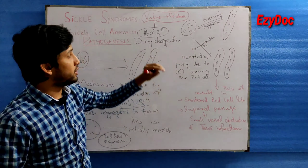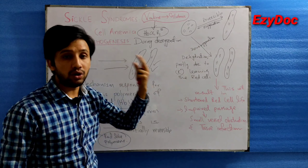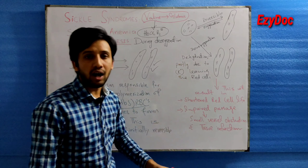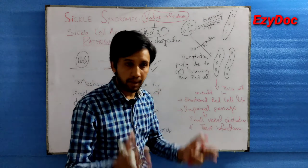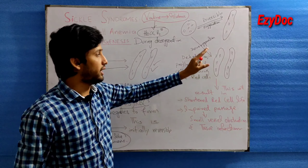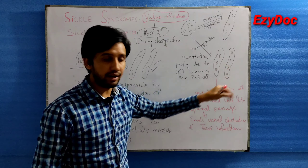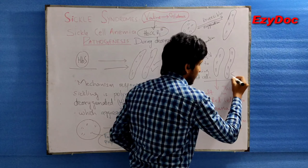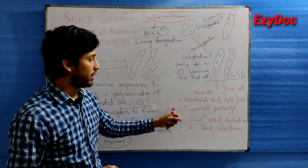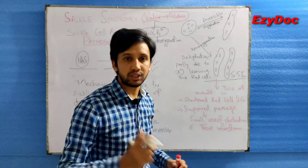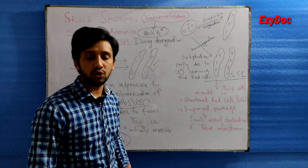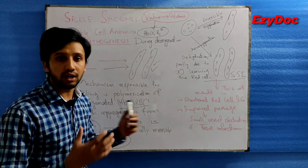However, due to continuous deoxygenation or dehydration — caused by potassium leaving the RBCs and damaging the red cell membrane — the sickling becomes irreversible. Once this irreversible sickle cell state is formed, it results in shortened RBC life. It also causes impaired passage through the microcirculation of blood vessels, leading to blockage of micro-vessels and resulting in tissue infarction.